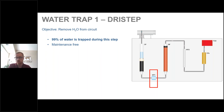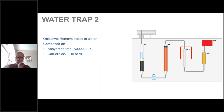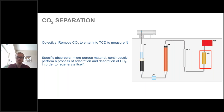After the reduction furnace, the gas passes through a second chemical water trap using anhydrone, removing the remaining ~1% of water. The output at this point is carrier gas, nitrogen, and CO₂. The CO₂ is then removed in the CO₂ separation stage so that only nitrogen enters the TCD. There are actually two CO₂ traps: while one is running, the other regenerates, allowing continuous sample analysis via the autosampler without stopping for regeneration.